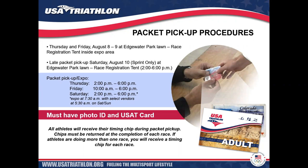Packet pickup will be Thursday and Friday, August 8th and 9th, at Edgewater Park. Late packet pickup for sprint distance only is at the race registration tent from 2 to 6 p.m. on Saturday. The expo runs concurrently. You must have your photo ID and USAT membership card. All athletes receive their timing chip at packet pickup. You'll flow through the registration tent to your designated table, receive your race packet with bib, swim cap, and race essentials, then collect your race t-shirt.